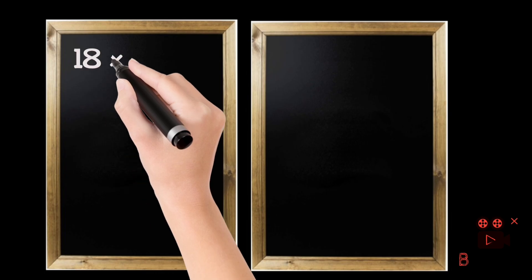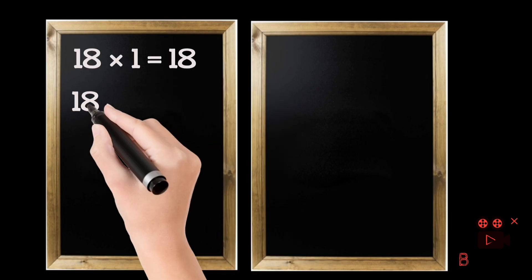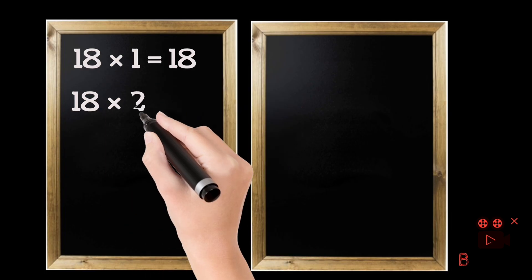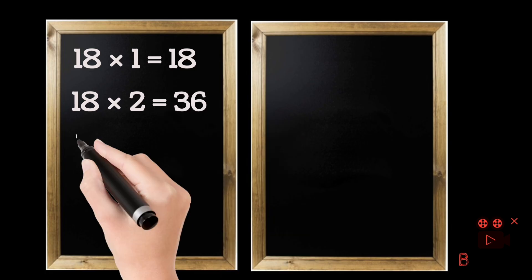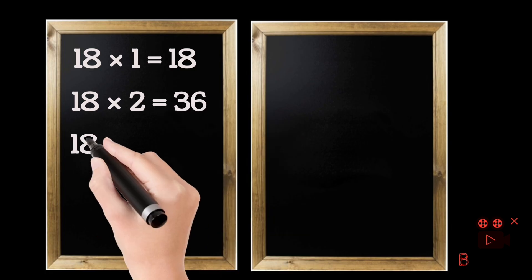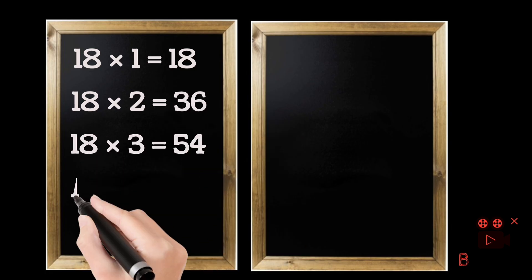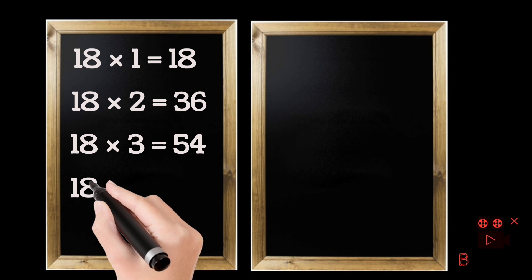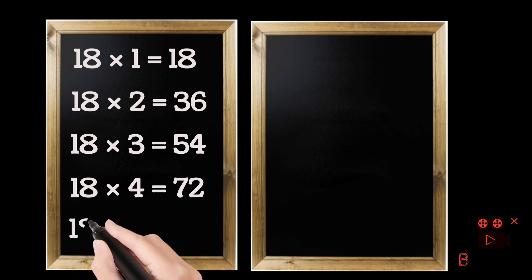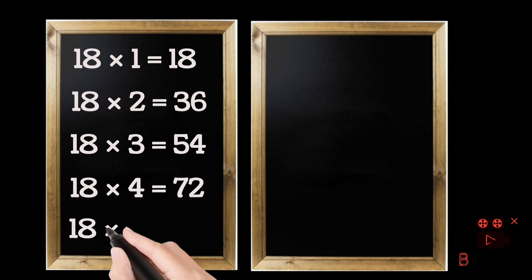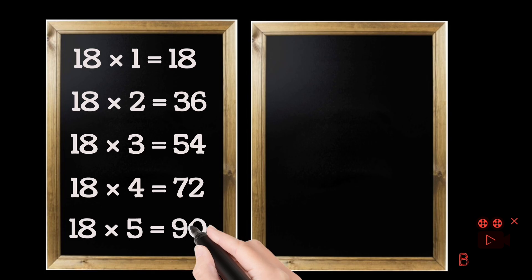18 ones are 18. 18 twos are 36. 18 threes are 54. 18 fours are 72. 18 fives are 90.